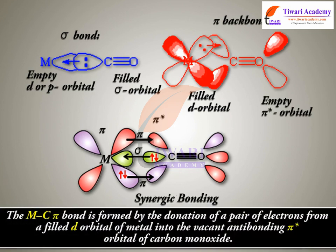The M-C pi bond is formed by the donation of a pair of electrons from a filled d orbital of the metal into the vacant anti-bonding pi-star orbital of carbon monoxide.